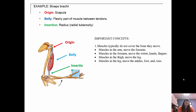The biceps brachii: the origin is the scapula, the belly is the main fleshy part between the tendons, and the insertion is the radius on the radial tuberosity, which hopefully you remember from your bone practical. They're color-coded to match up the origin, belly, and insertion. Importantly, muscles typically do not cover the bone they move. Muscles in the arm move the forearm; muscles in the forearm move the wrists, hands, and fingers; muscles in the thigh move the leg; and muscles in the leg move the ankles, foot, and toes. The muscles are usually superior to the bone that they move.